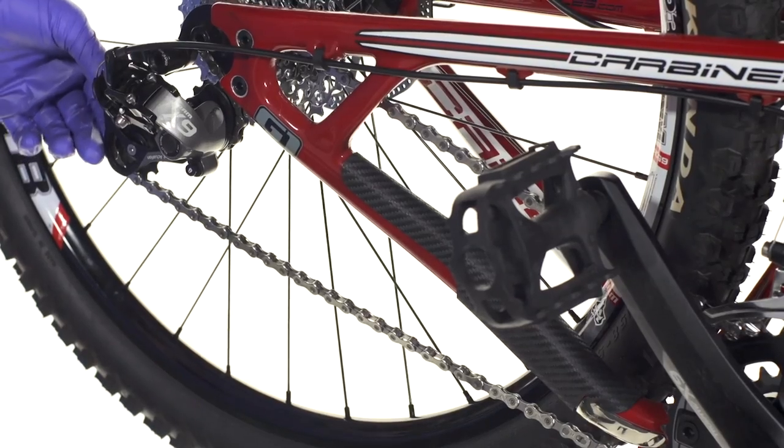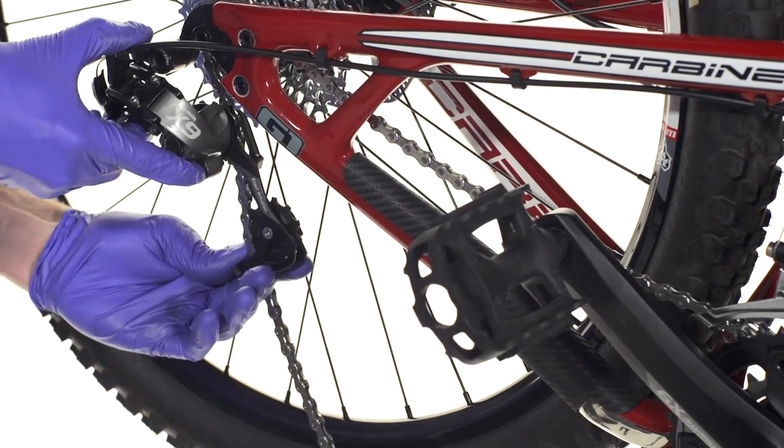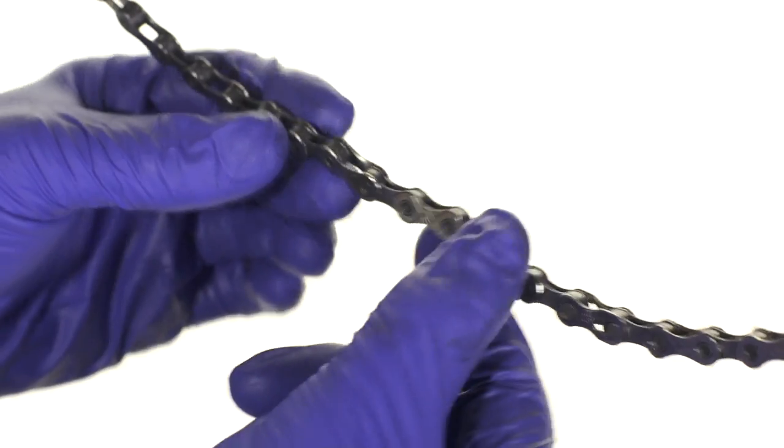To make this next part easier, we're going to move the rear derailleur into the forward and locked position. So we're going to remove this pin.